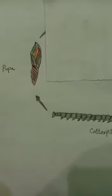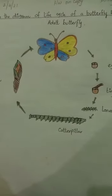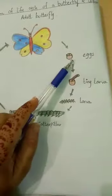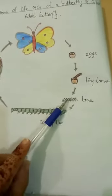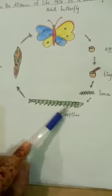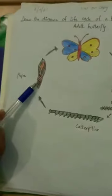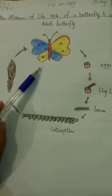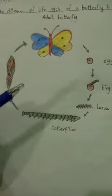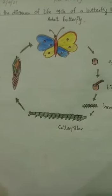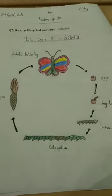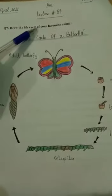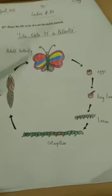Next step — what is the life cycle of a butterfly? Let's see. That is an adult butterfly. You have to draw the cycle like this.